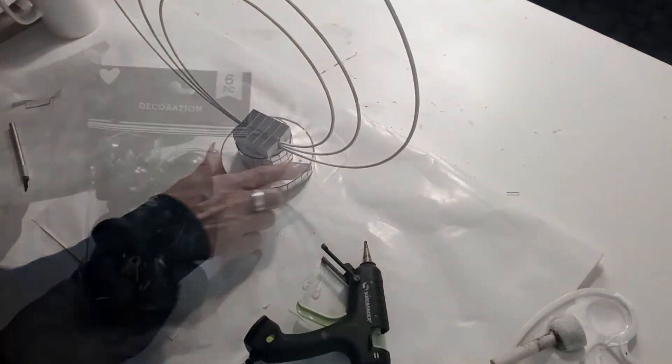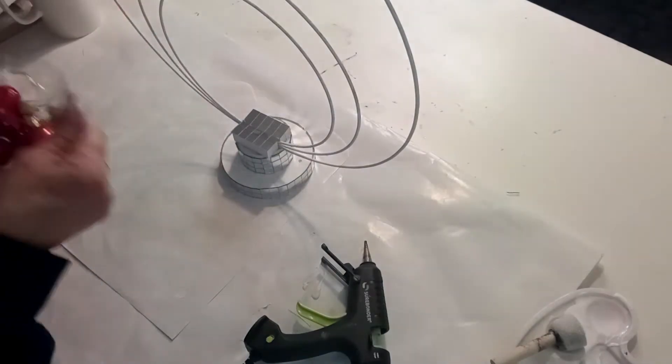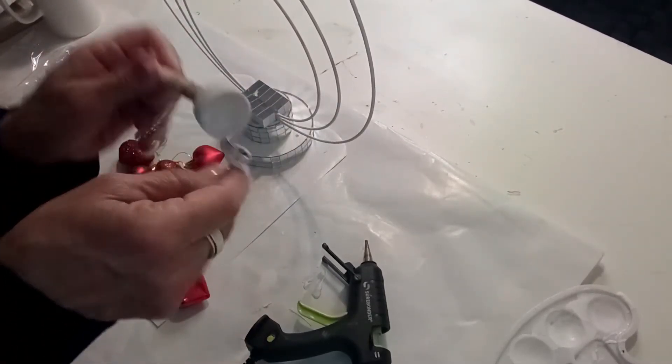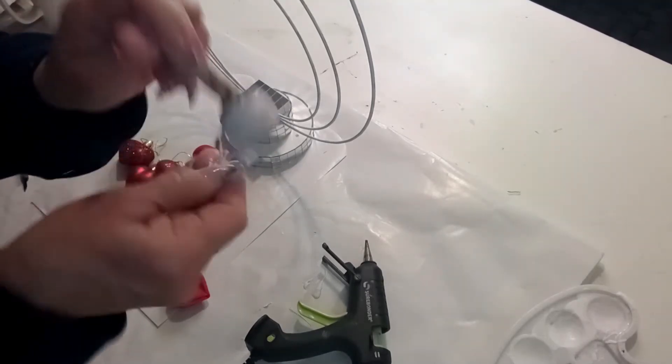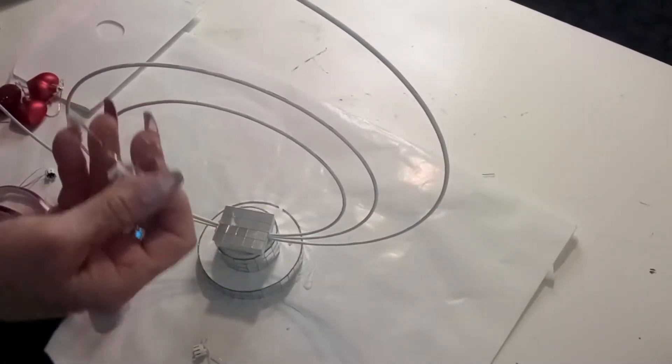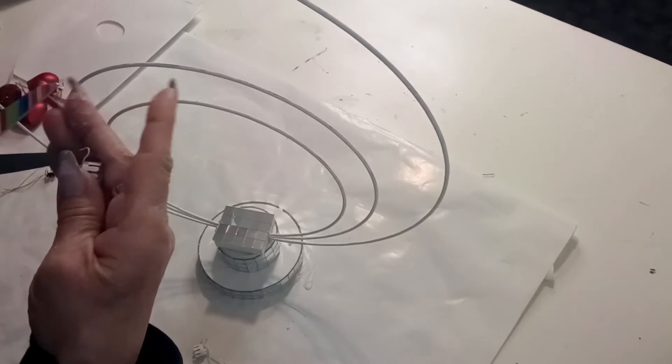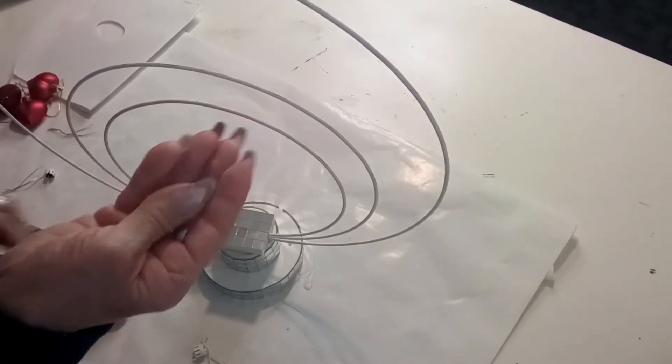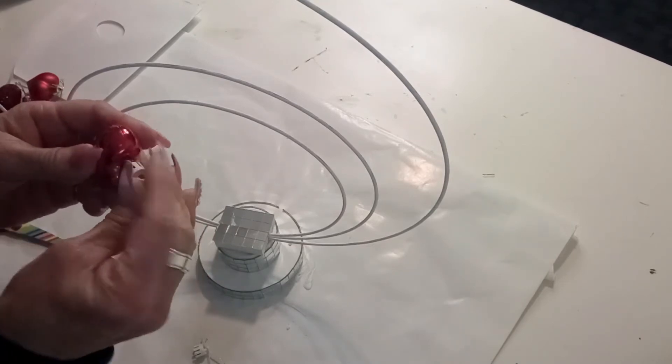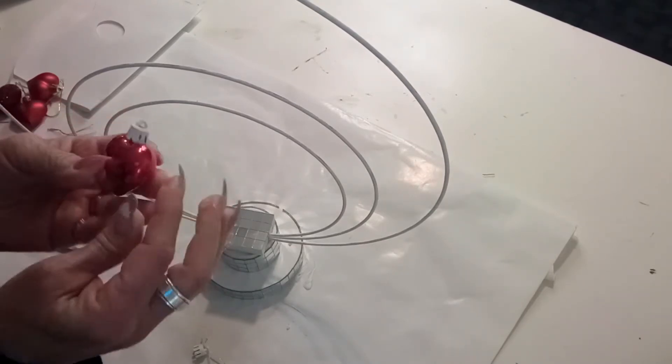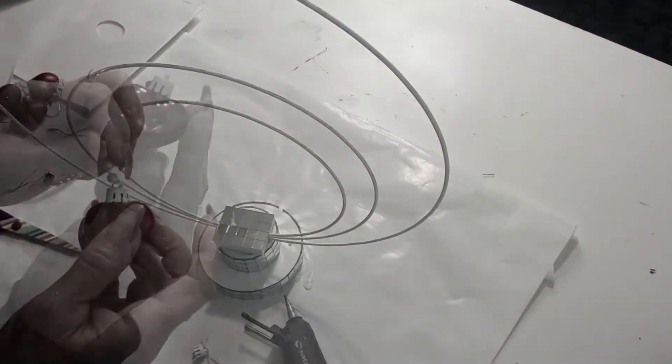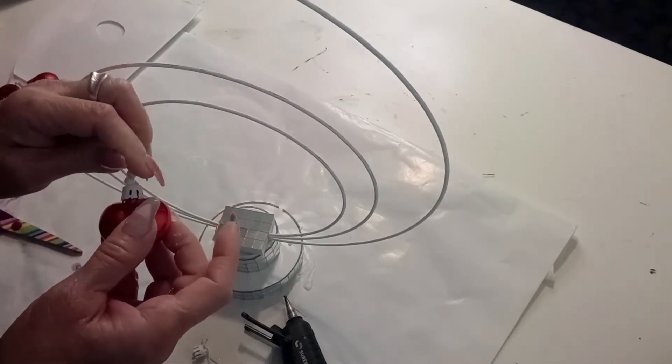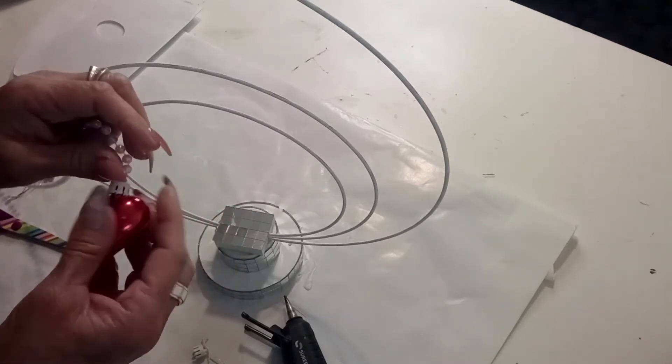I got these heart ornaments from Dollar Tree. I'm going to take two of them. Now that gold doesn't match, so I'm going to paint it in white with this chalk paint. Now that it's completely dry, I'm going to put them back together. And once that is done, I have some pearl necklace that I bought at Amazon. I'm going to hot glue it to the top, and that's how I'm going to hang it to the brass ring.